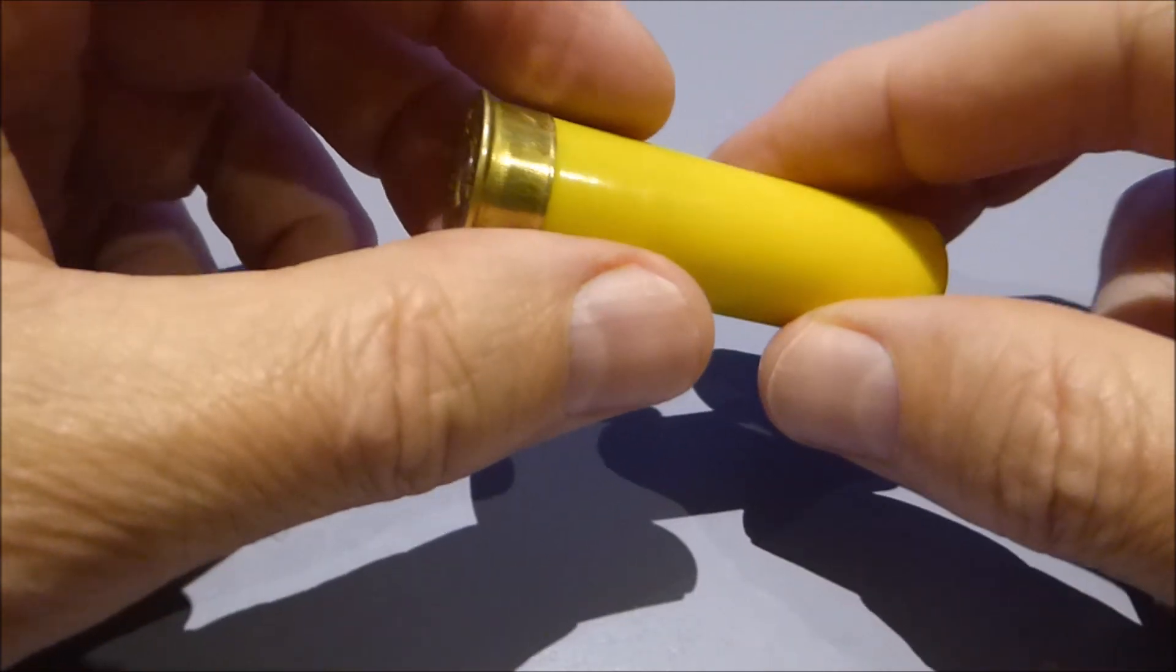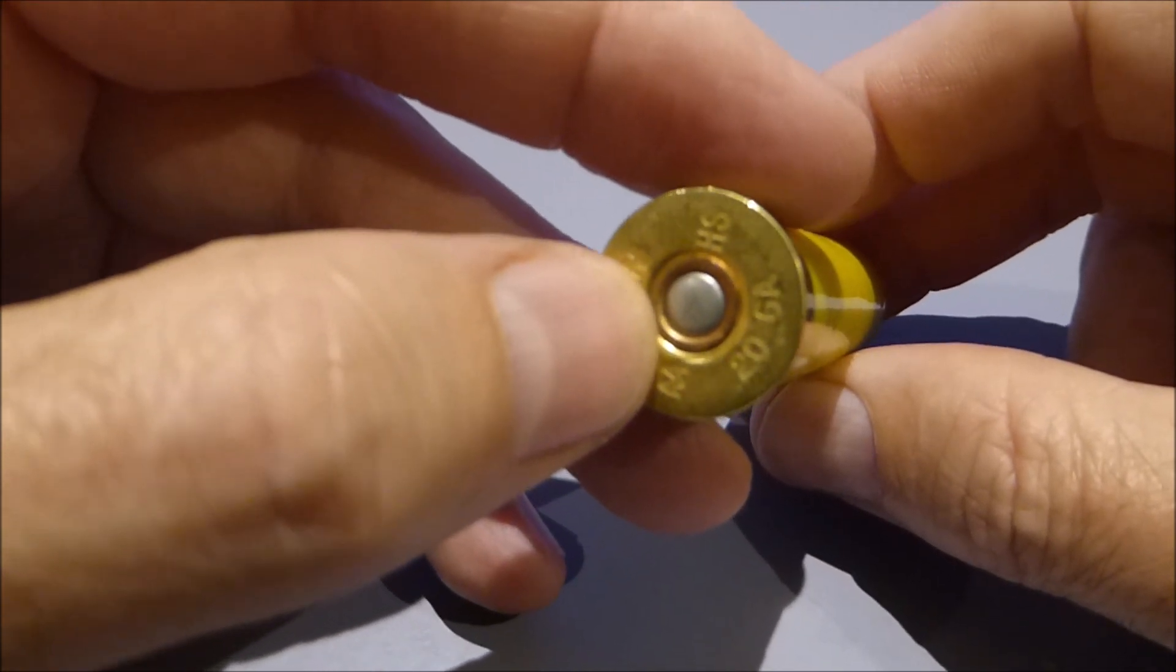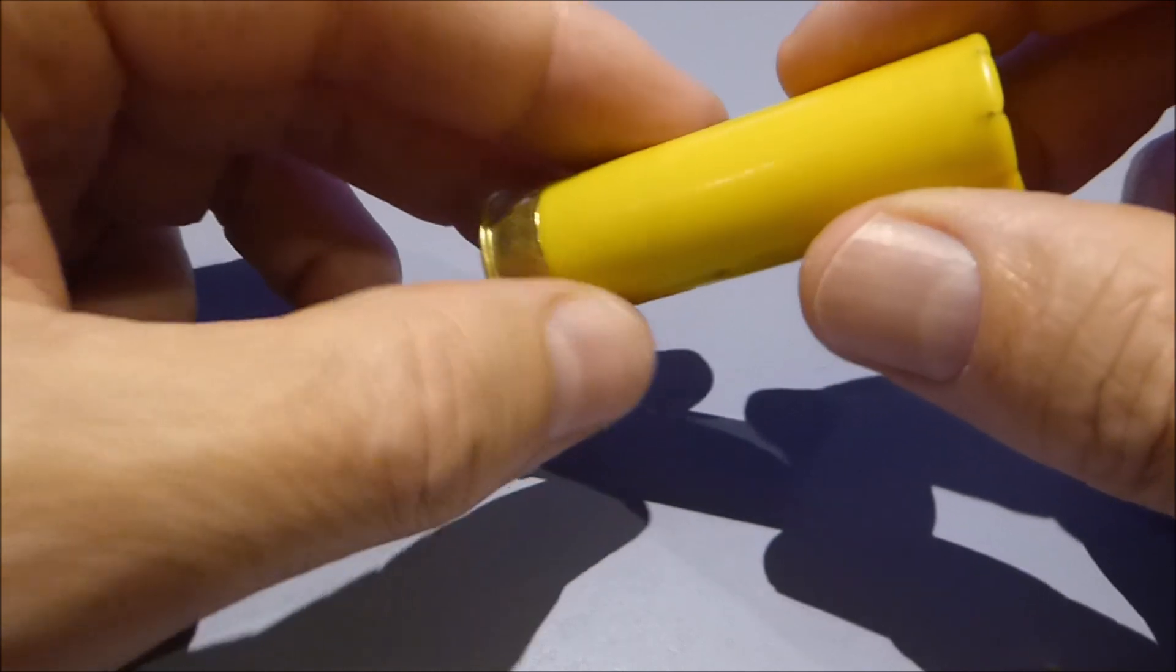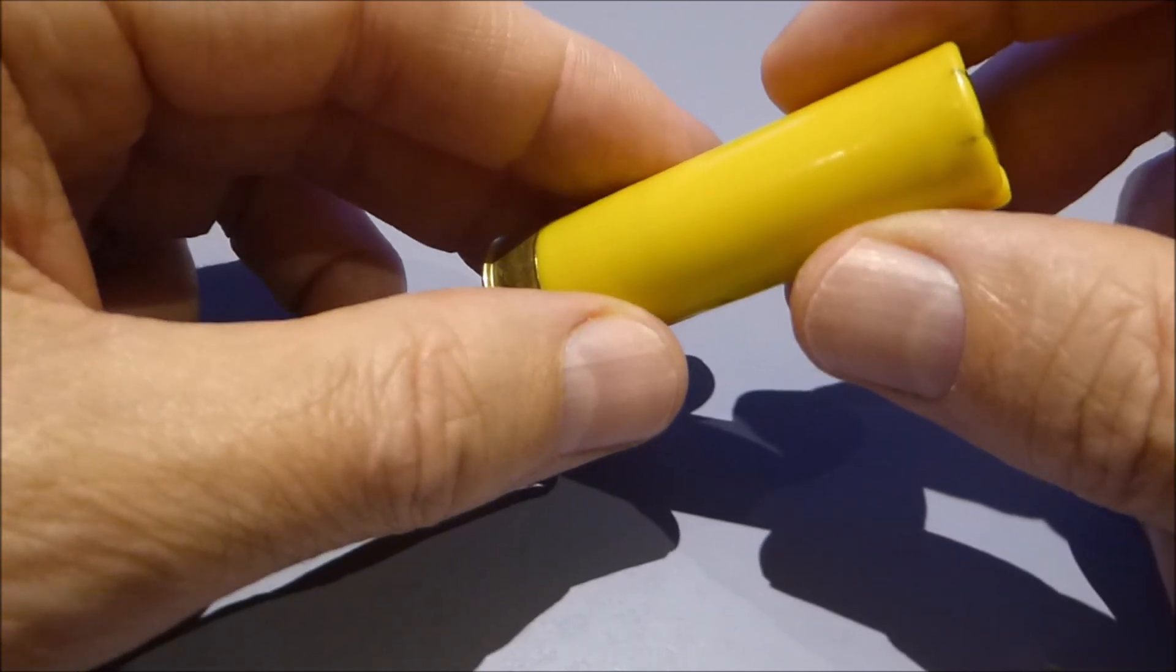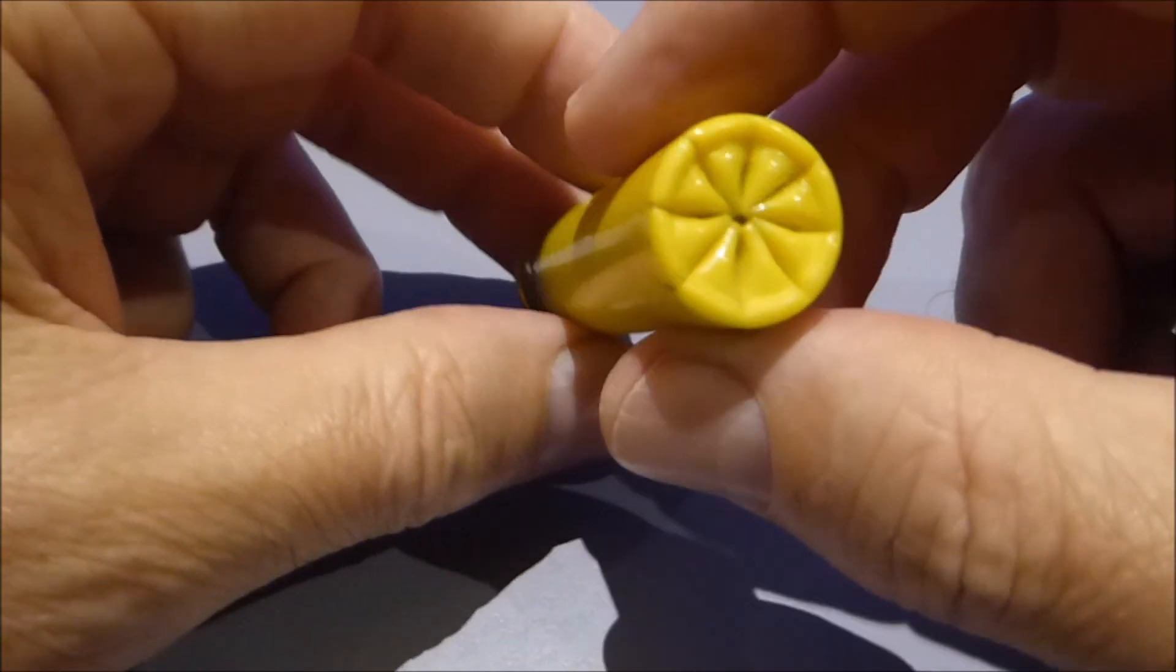I fired them and reloaded them using the standard shotgun primers, ballistic products two and three-quarter TPS wads, and two Teflon wraps. The buffer I use is pearl barley. We'll have a look at the components after firing.